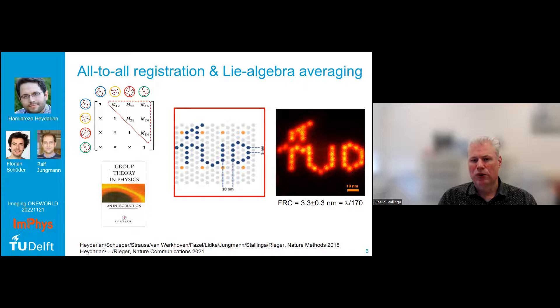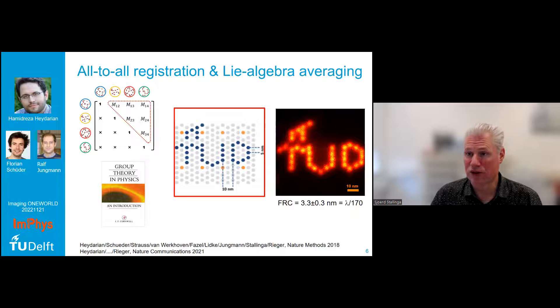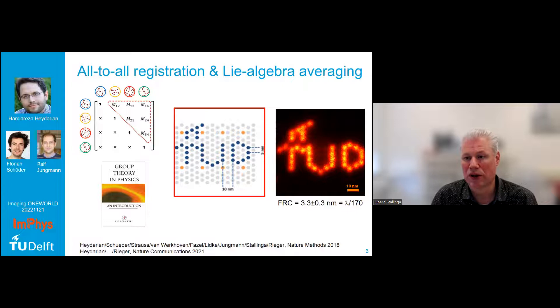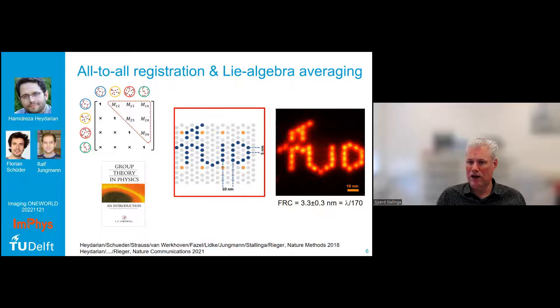One of the highlights was applying this technique to a DNA origami structure made by collaborators in Munich from Rolf Jungmann's group, where they made the logo of our university, TU Delft. We averaged several hundreds of these localization microscopy images and nicely found the reconstruction on the right. Assessing the FRC resolution, we're in the single-digit nanometer regime — the binding sites for DNA hybridization, separated by five nanometers according to the DNA-PAINT method, are clearly separated in the final reconstruction.